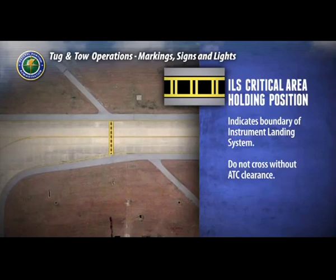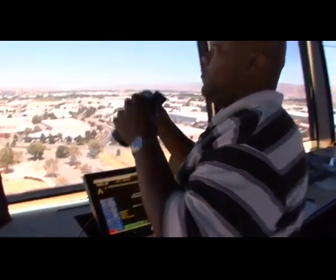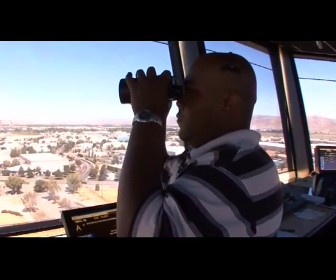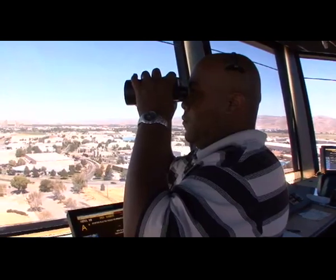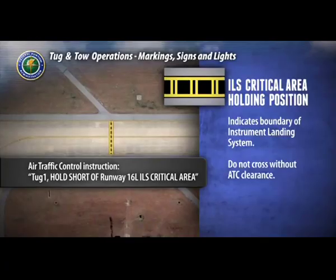The ILS critical area holding position marking indicates the boundary of the ILS critical area, or instrument landing system. If the ILS is in use due to weather or other conditions, do not cross this marking without air traffic control clearance. Taxiing beyond this point may interfere with the ILS signal to approaching aircraft. If the ILS is in use, you will receive a hold short instruction from air traffic control—for example, 'Tug 1, hold short of runway 16L, ILS critical area.' You will hold at this position until air traffic control gives you instructions to proceed.